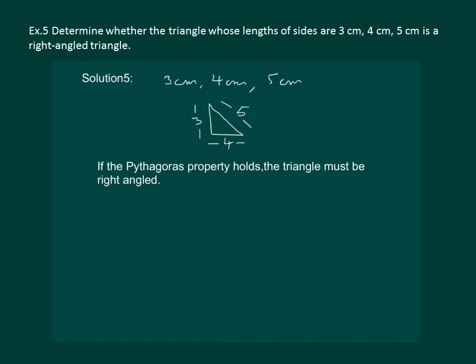So, let us calculate 3 square plus 4 square. 3 square is 9, plus 4 square is 16, on adding we get 25. And 5 square is also 5 into 5, that is 25.